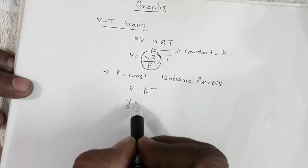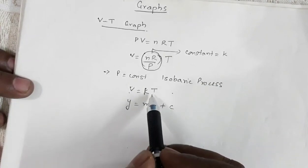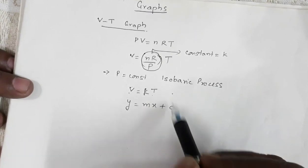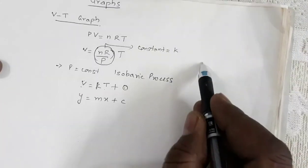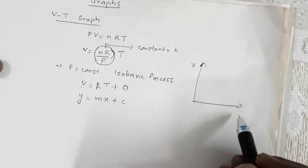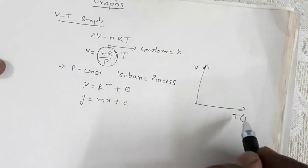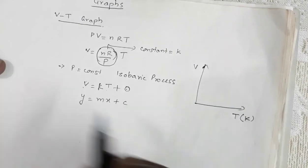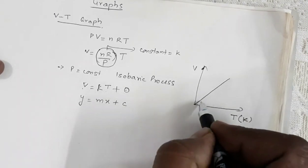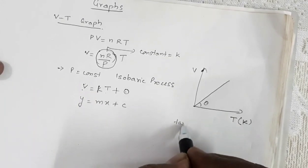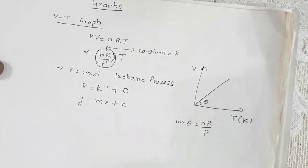This equation is of the form Y = MX + C. If we compare it, V is Y, T is along the X axis, and the intercept C is 0. So if we draw a VT graph with volume on Y and temperature T in Kelvin on X, we get a straight line passing through the origin, with slope K. The angle theta satisfies tan(theta) = nR/P, which is the slope.